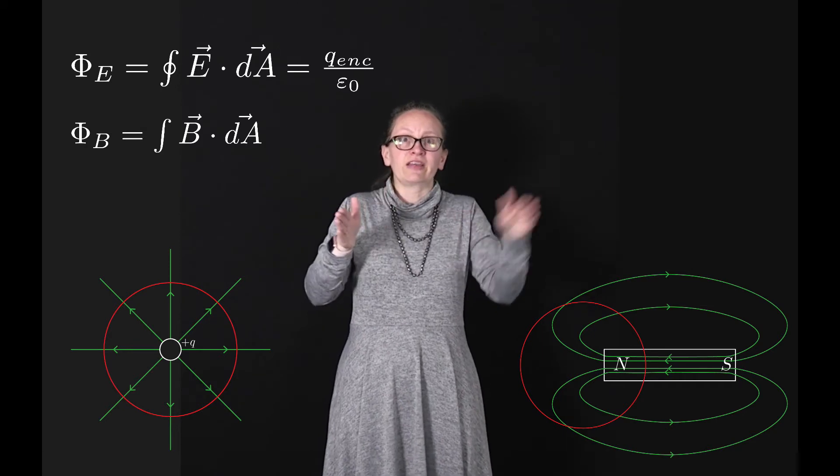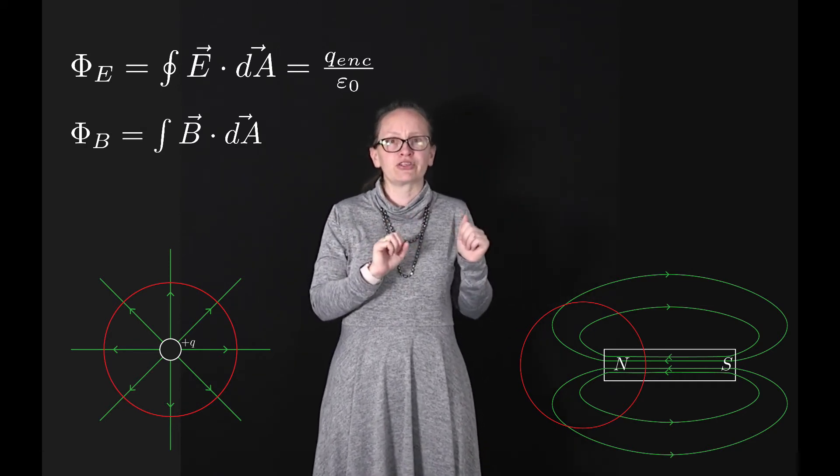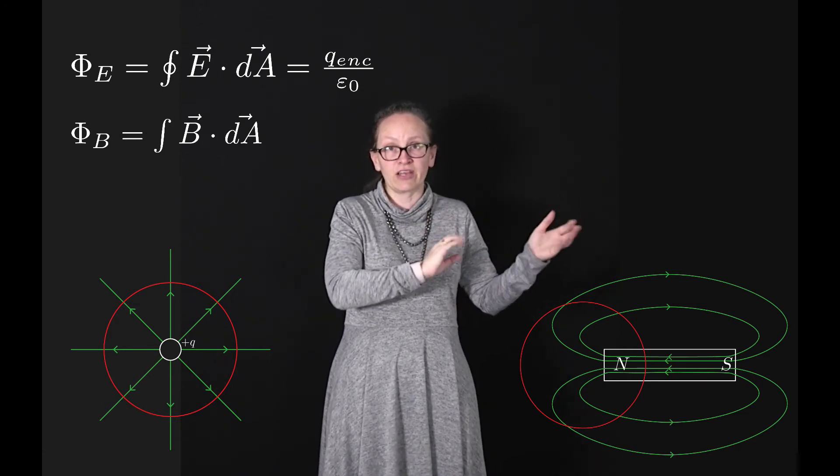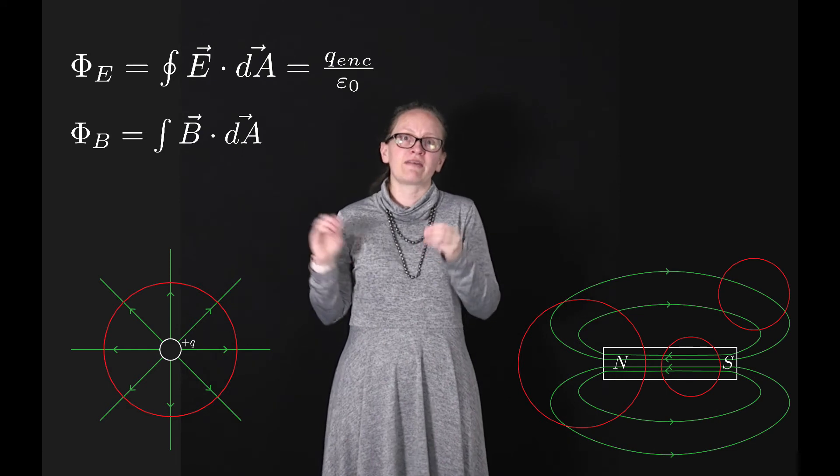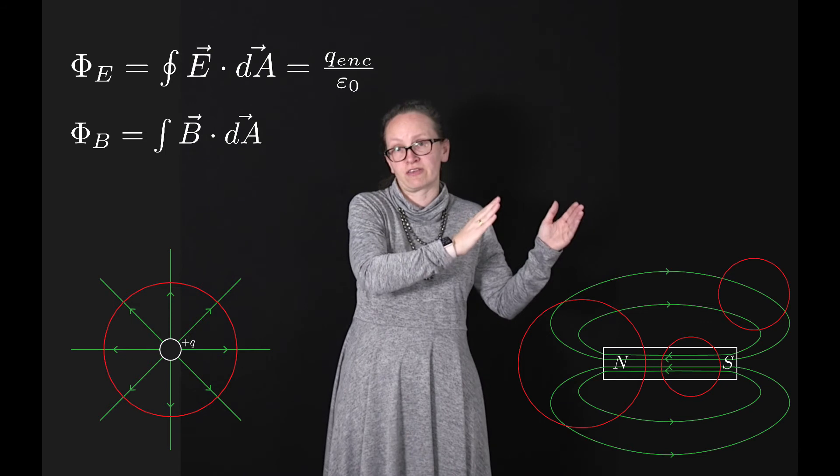Instead, magnetic field lines always form loops. So however we imagine placing a surface near a magnetic field, it's impossible to have a different number of magnetic field lines entering and leaving the surface.